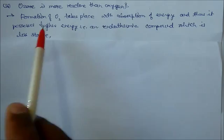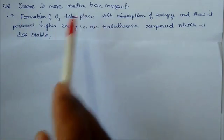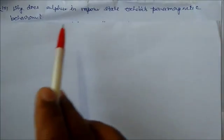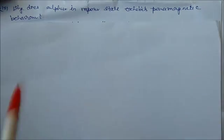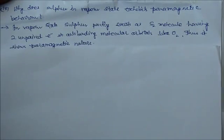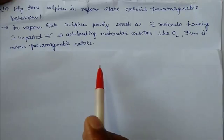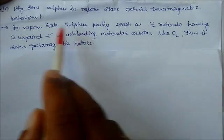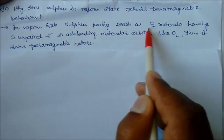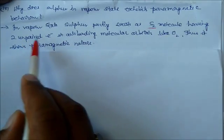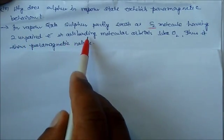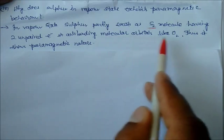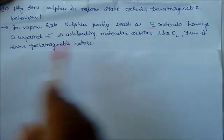Why does sulfur in vapor state exhibit paramagnetic behavior? Because in vapor state, sulfur partly exists as S2 molecules having two unpaired electrons in anti-bonding molecular orbitals, like oxygen. Thus, it also shows paramagnetic nature.